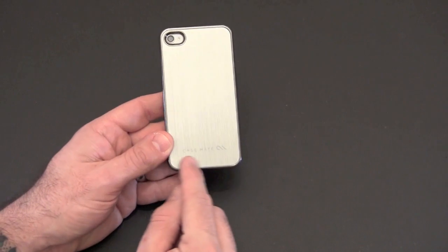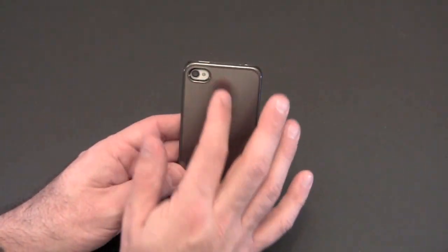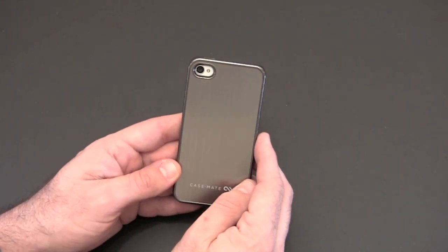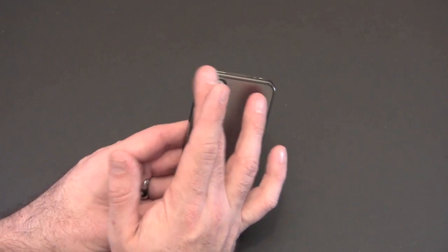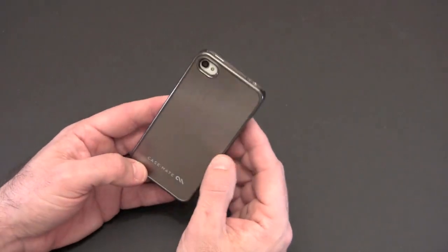You can see the Casemate logo in the bottom portion of the case, and then one large pill-shaped cutout for the camera and the flash. This is nice and big, so there's no issues with the flash washing back.